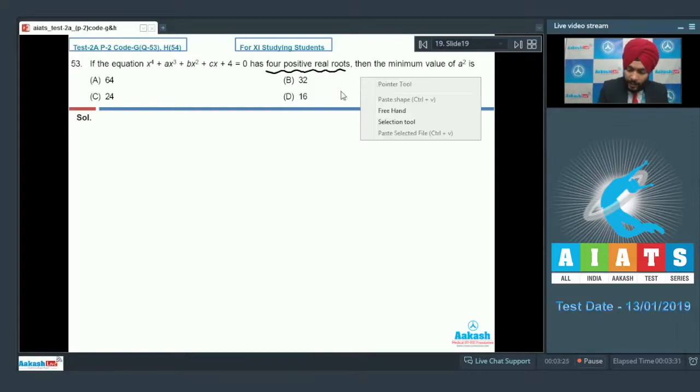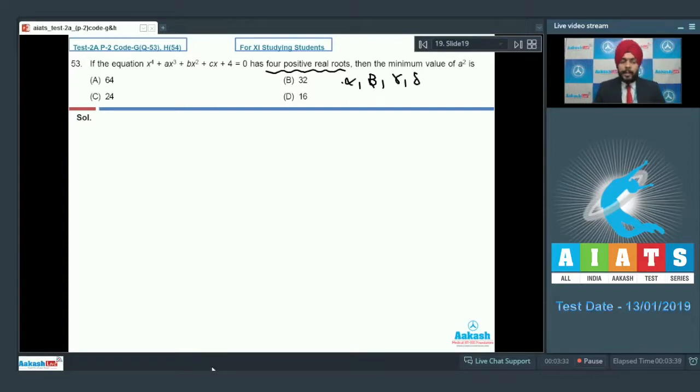Let us say alpha, beta, gamma, delta. If they are positive, we can apply the AM-GM inequality. Sum of roots is minus A. Product of all the roots is 4.